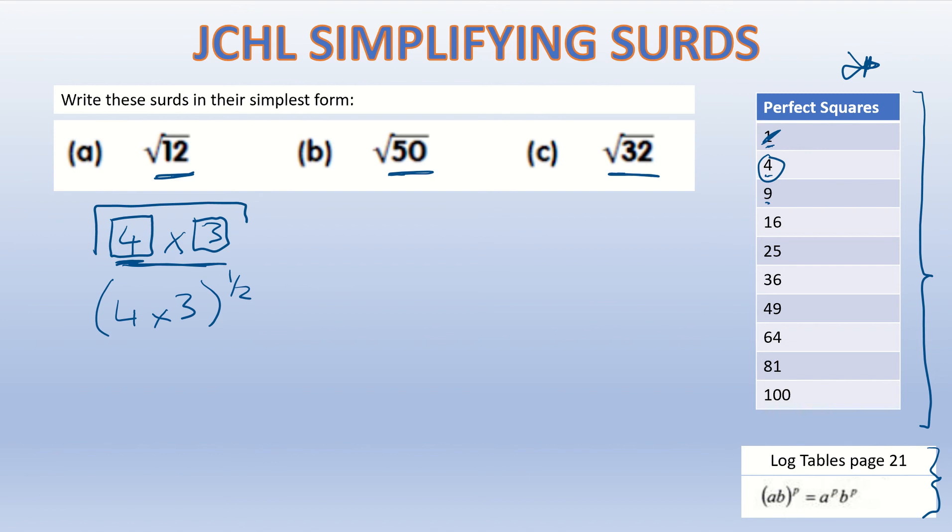Also, if we were to apply another law of indices, this one down here that I'm just after writing out, if we apply this law to what I have here, what you would end up with is 4 to the power of a half times 3 to the power of a half. So the half here, the power, is distributed over the 4 and the 3.